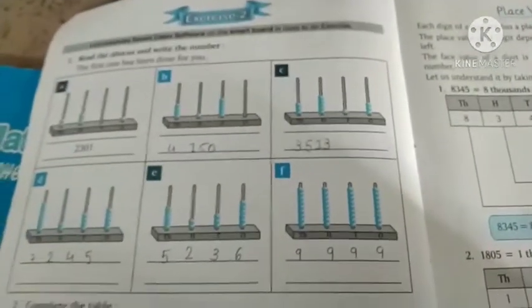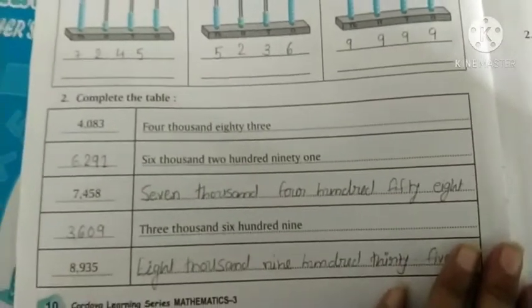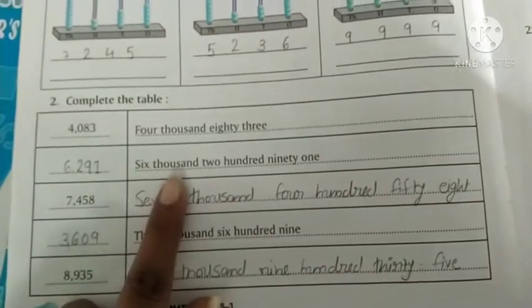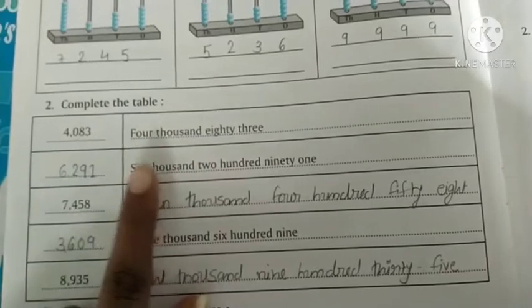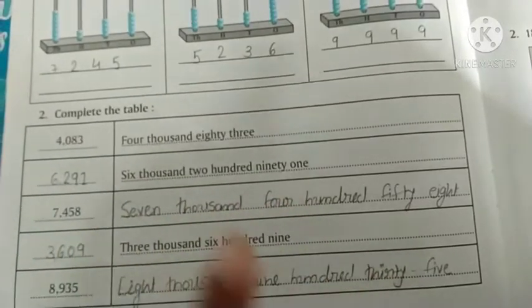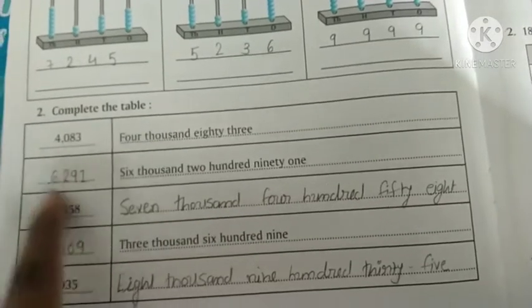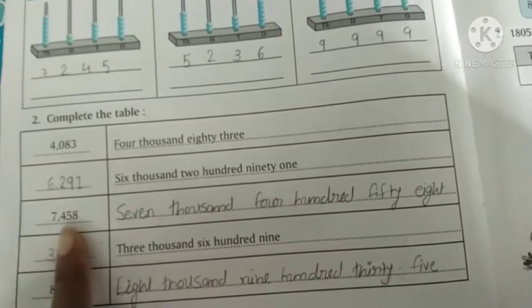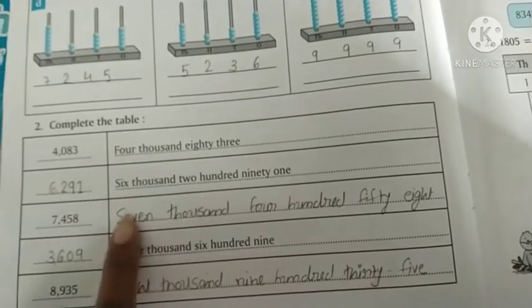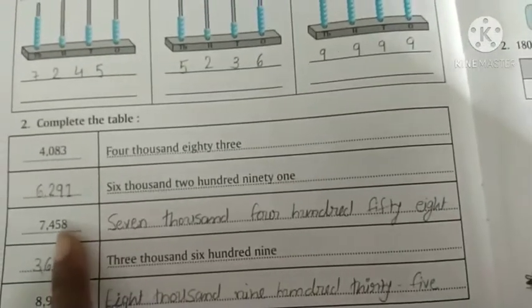Exercise 2 is about Abacus. First you need to know how many beads are there. Next, complete the table with number names. For 6291, it's six thousand two hundred ninety-one. For 7458, first digit 7 gets 1000, making it seven thousand four hundred fifty-eight.